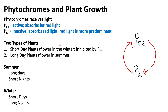In the sunlight we receive from the sun, red light is more predominant compared to far red light. This is important because when phytochrome red absorbs red light, it is converted into phytochrome far red, and when phytochrome far red absorbs far red light, it is converted back into phytochrome red.